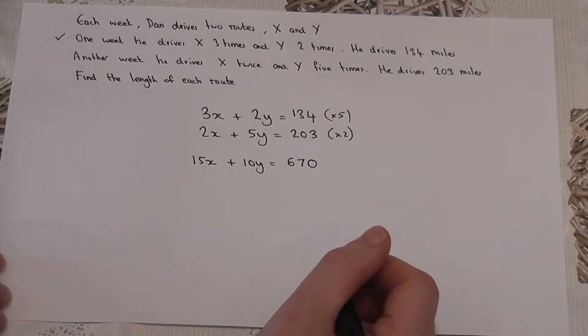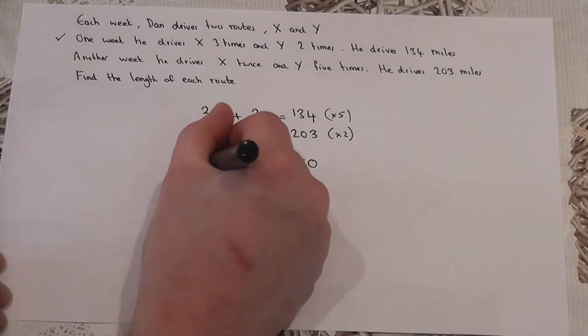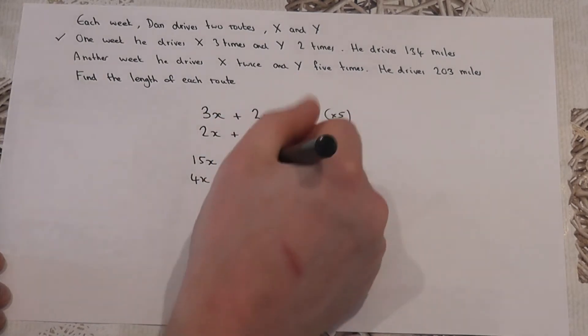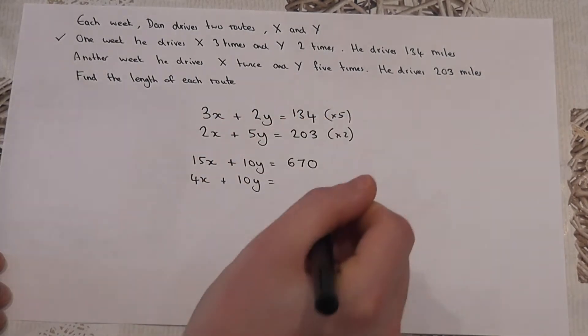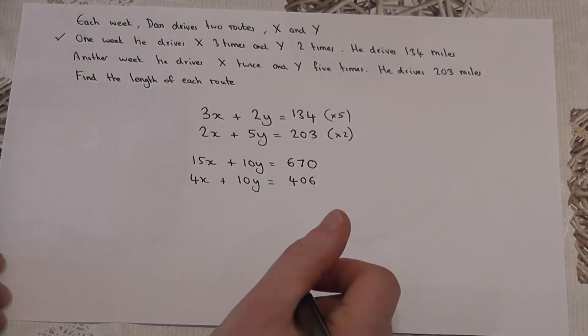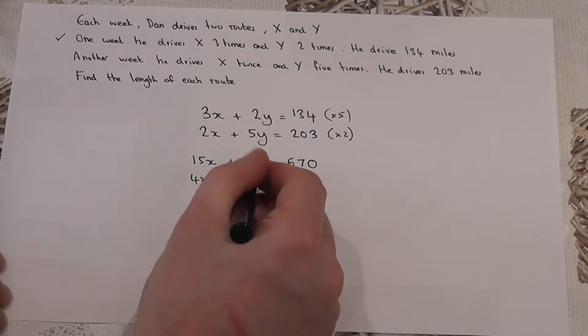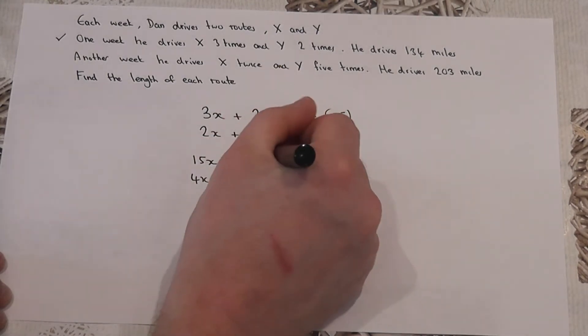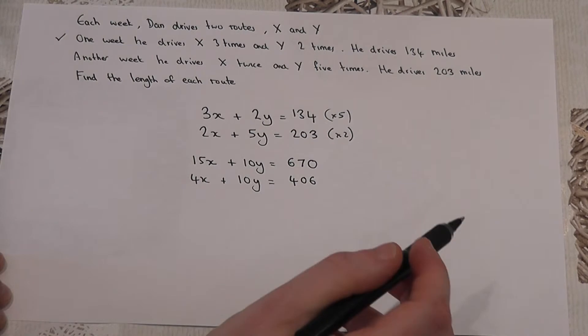If I double the bottom equation, then two times two is four. Two times five is ten. And two times 203 is 406. So, we've got the coefficient or the number of y's to be the same, ten and ten.